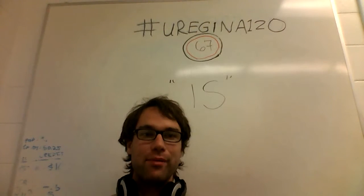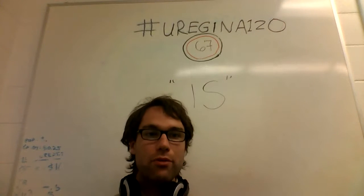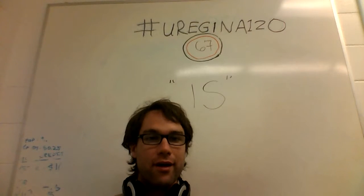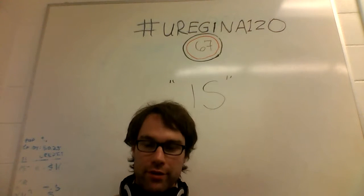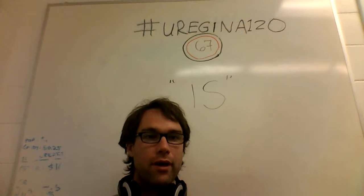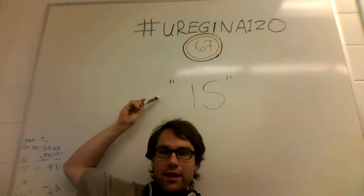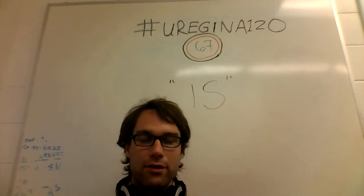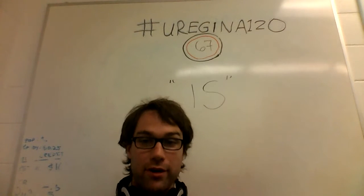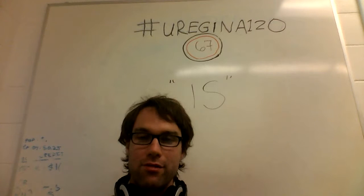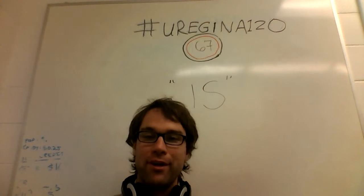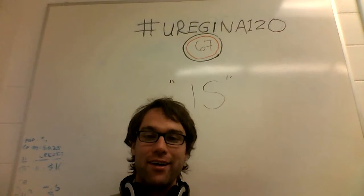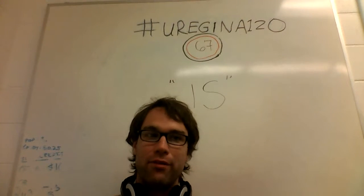Today we're going to be talking about another logical fallacy — possibly one of two logical fallacies. Some people will say that the naturalistic fallacy and the is-ought fallacy are the same; some will say they're different. What we're going to be discussing is the word "is," and good luck finding discussions about this word on Google — it has a lot of collisions with other kinds of content and is very difficult to search for.